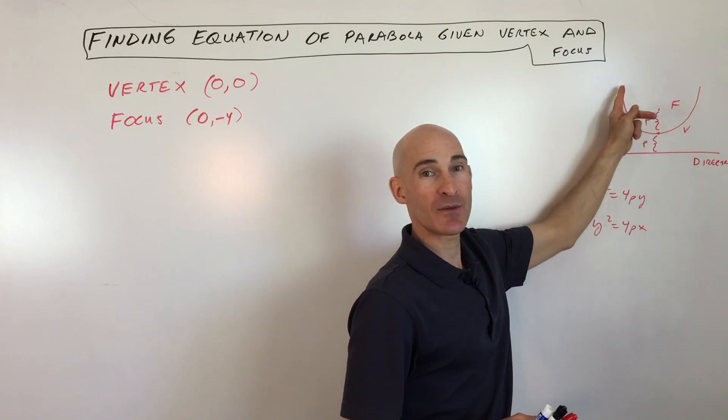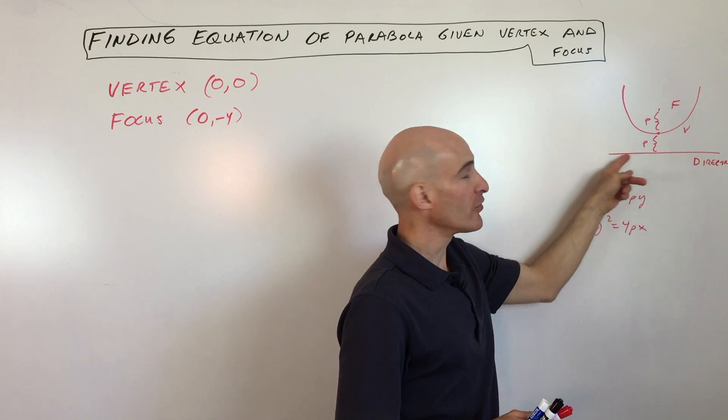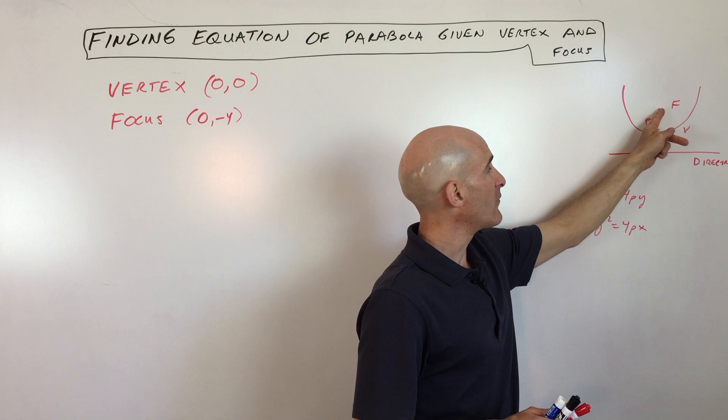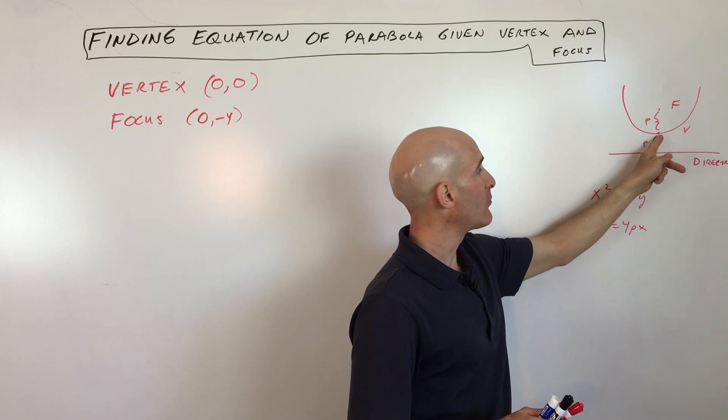We have a parabola like this. It's a U-shaped graph. We have a line that's called the directrix and we have a point that's called the focus and a point that's called the vertex.